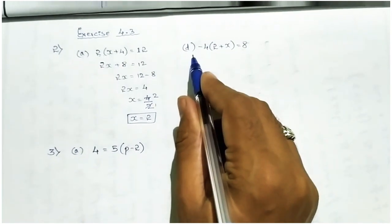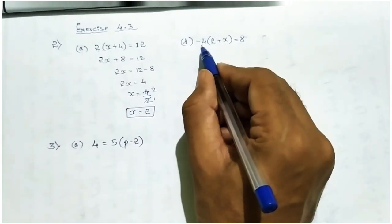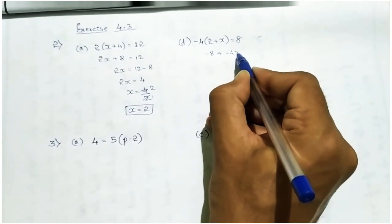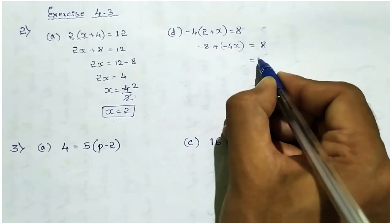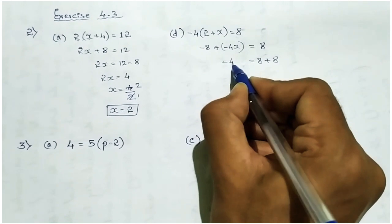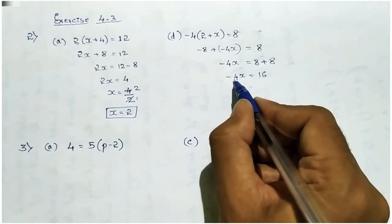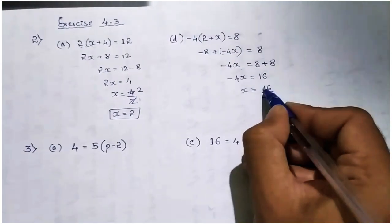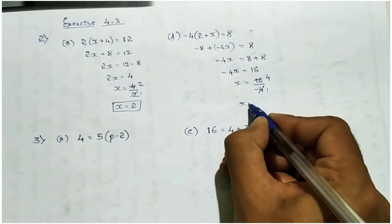Taking d: minus 4 into 2 plus x equal to 8. Multiply minus 4 to both 2 and x: minus 4 into 2 is minus 8, and minus 4 into x is minus 4x, equal to 8. Take minus 8 to the right side — it becomes plus 8 — so minus 4x equal to 8 plus 8, which is 16. Take minus 4 to the right side — it becomes divisible — so x equal to 16 by minus 4. Dividing gives minus 4, so x equal to minus 4.